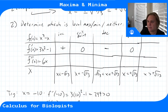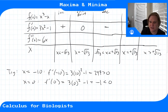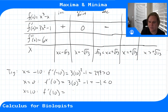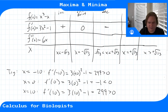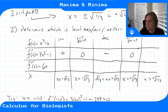To the right of +√(1/3), let's try x = 10. f'(10) = 3(10²) - 1 = 299, which is positive—the same as x = -10, since (-10)² = 10². So the function is increasing to the right.